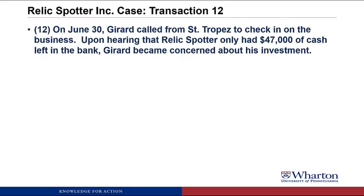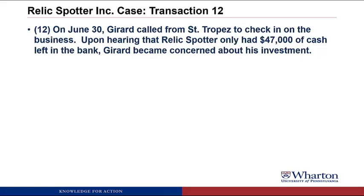Let's go on to transaction 12. On June 30th, Gerard called from Centro Pay to check in on the business. Upon hearing that RelicSpotter only had $47,000 of cash left in the bank, Gerard became concerned about his investment. If we bring up the cash T-account, at this point we could draw a line, add up the debits, add up the credits, subtract the credits from the debits, and we'd have a balance of $47,000.